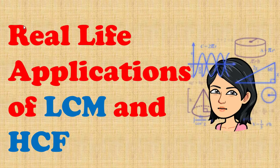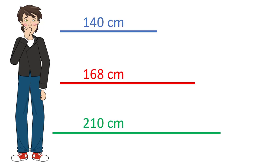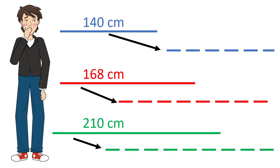Hello, welcome back to our series of real life applications of LCM and HCF. This is Farhan and he has three ropes of lengths 140 cm, 168 cm and 210 cm. He wants to cut these ropes into smaller pieces of equal length. How many pieces can he get? What should be the length of each piece?